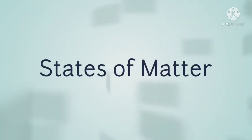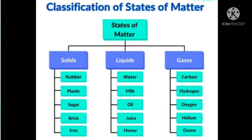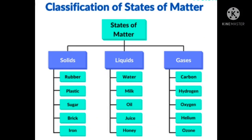Let us see the states of matter. The states of matter are divided into three types: first, solids; second, liquids; and third, gases. The examples of solids are rubber, plastic, sugar, brick, iron, etc.